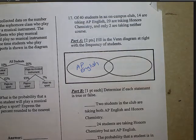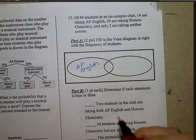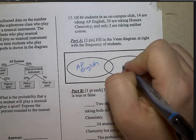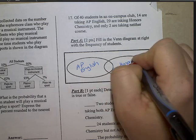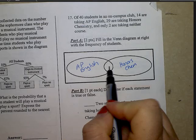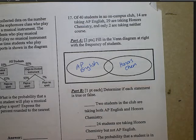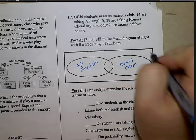14 are taking AP English, 29 are taking Honors Chemistry. By the way, it does not tell us how many are taking both. And only 2 are taking neither course. So I know 2 goes on the outside.